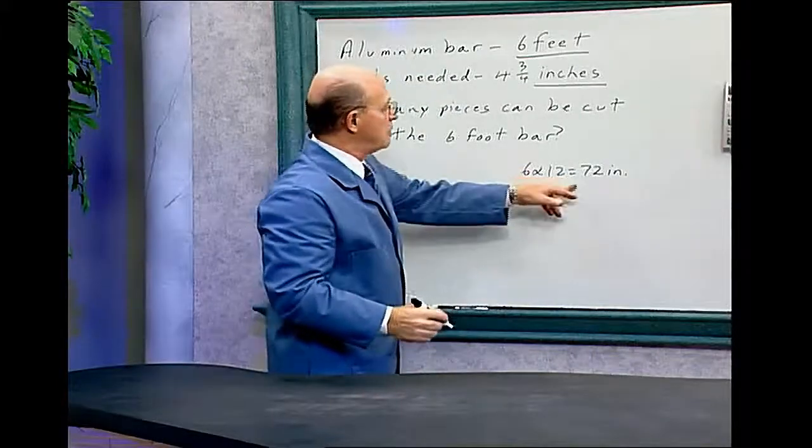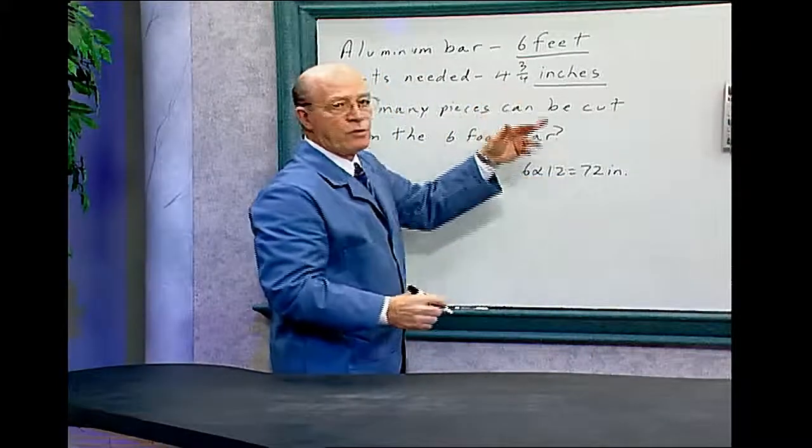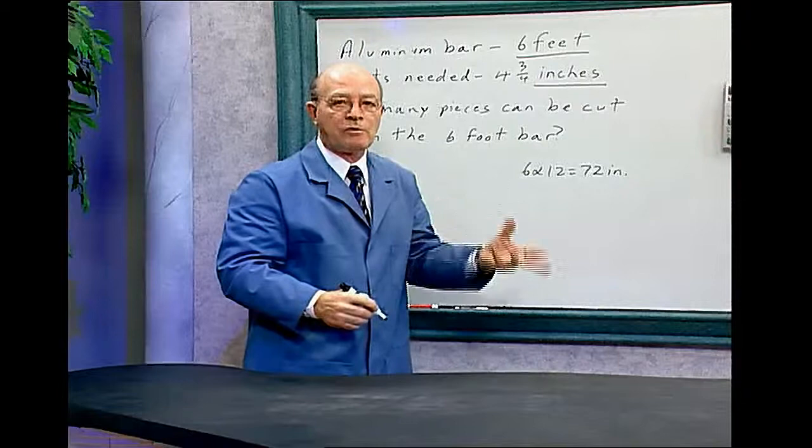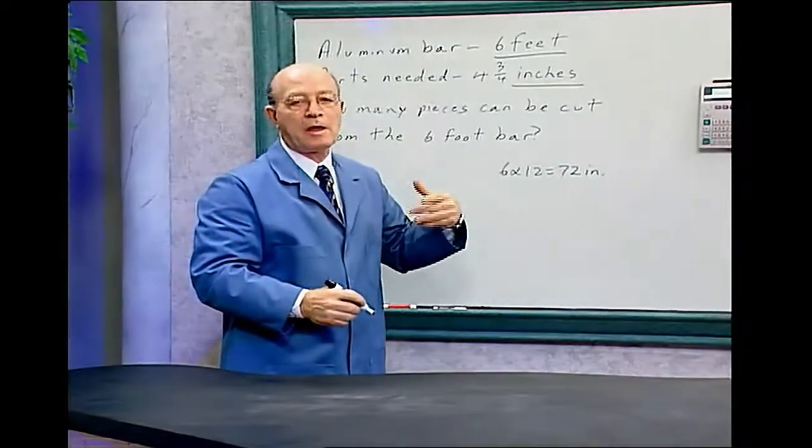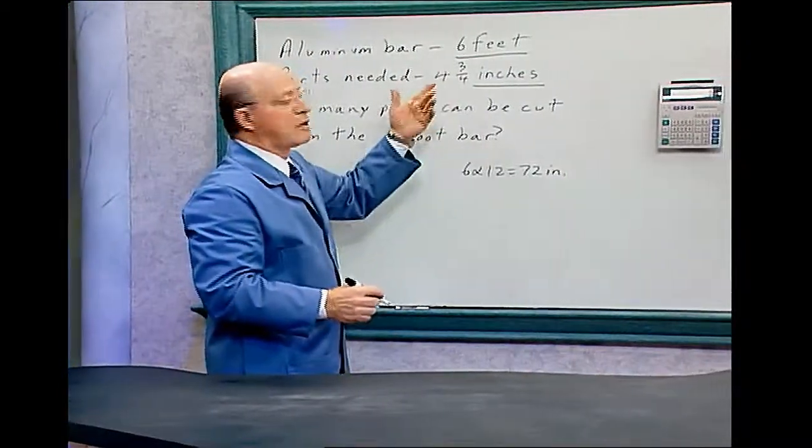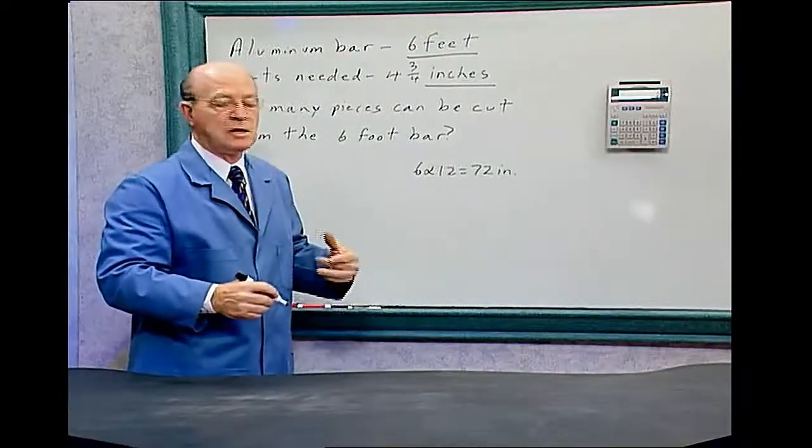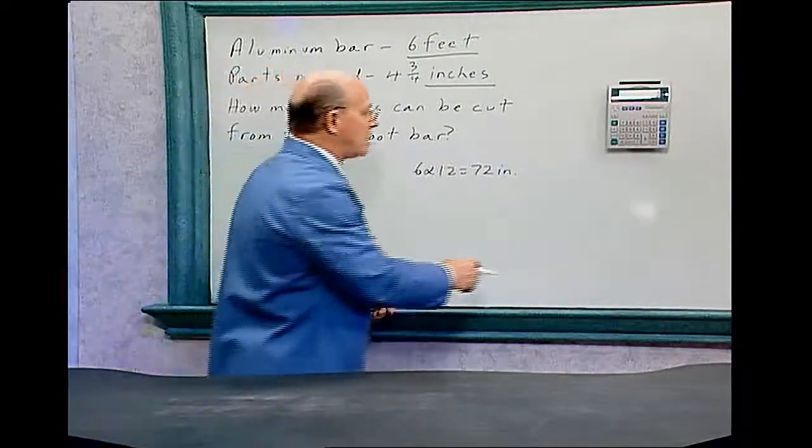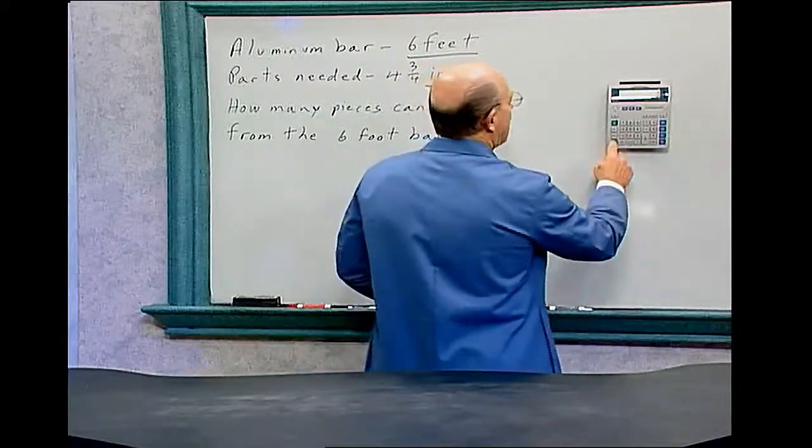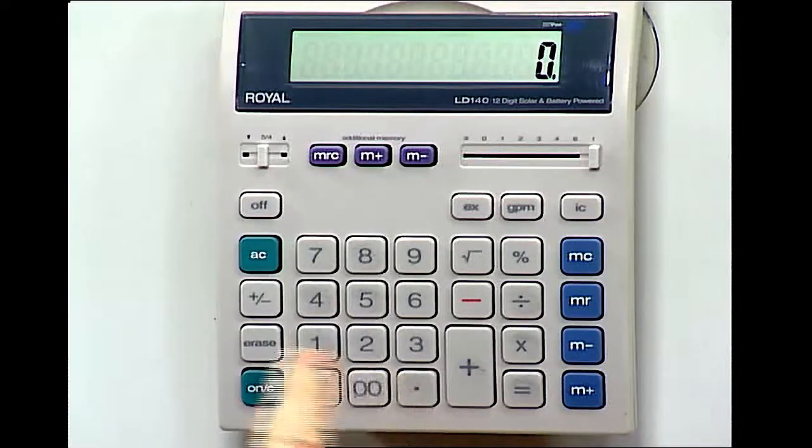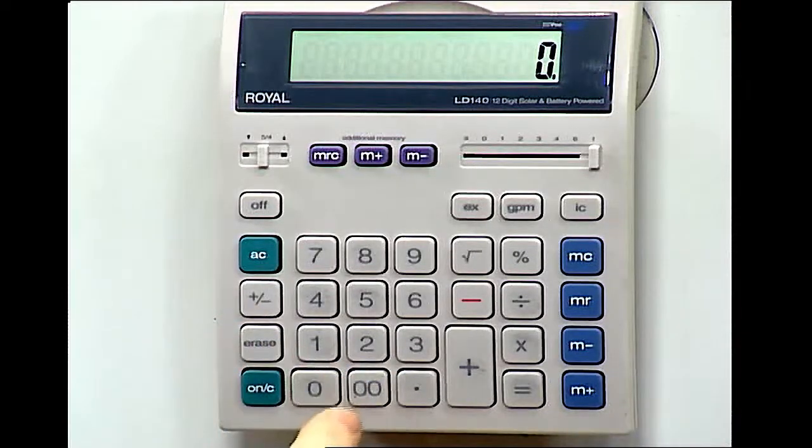Now we want to divide 72 by 4 and 3/4. You probably know what 3/4 is, but if it was another number like 4 and 15/16 or 13/16, we want to demonstrate it on the calculator. Let's clear the calculator. Let's first take the 4 and 3/4 and put it into memory.